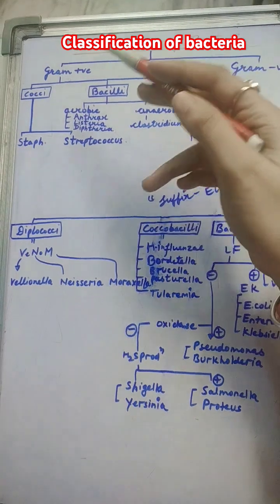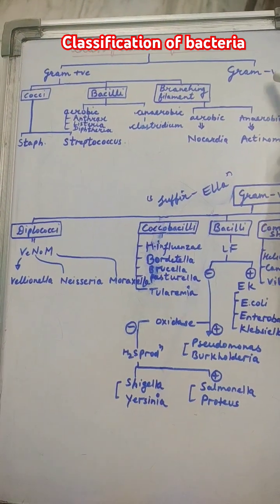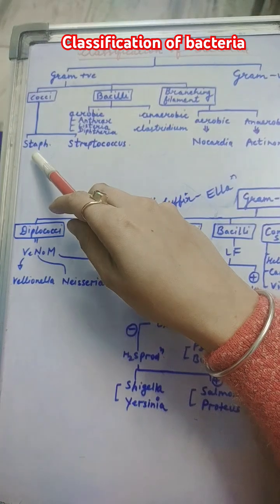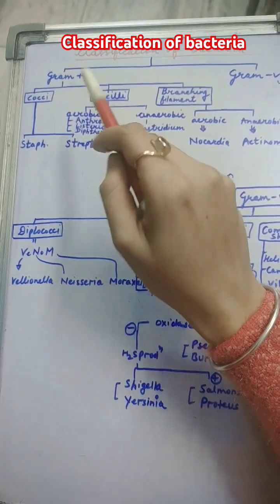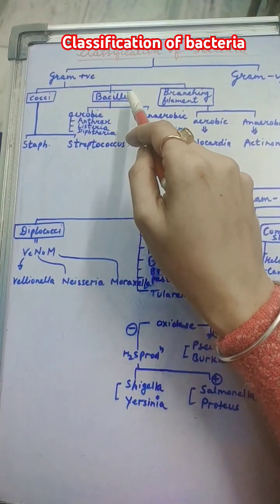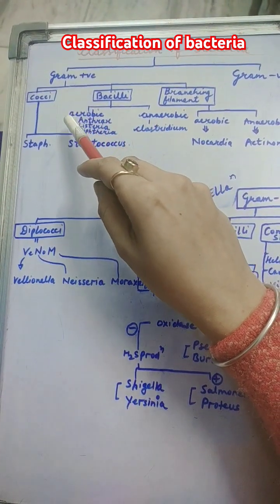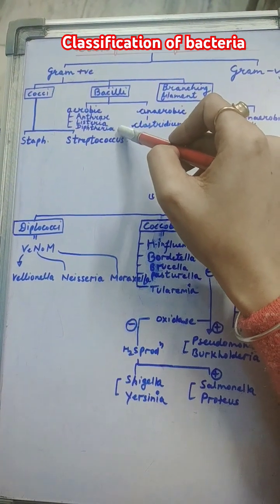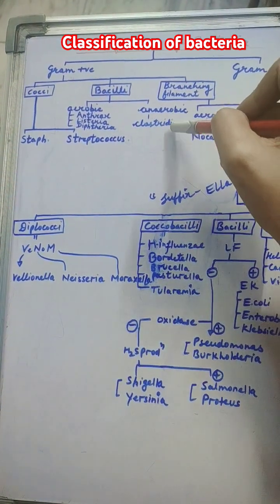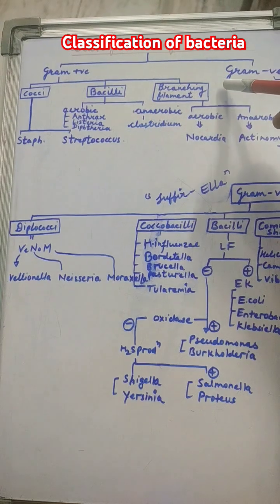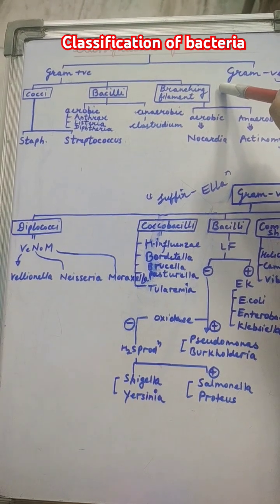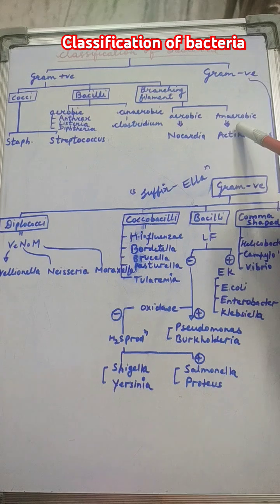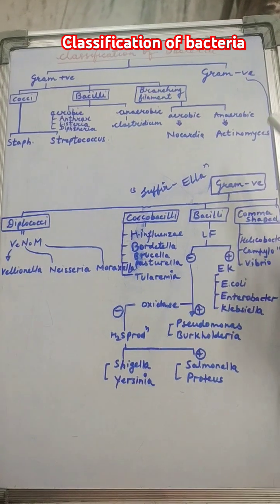Bacteria are divided into gram positive and gram negative. In gram positive cocci, there are Staph and Streptococcus. In gram positive bacilli, the aerobic section includes Anthrax, Listeria, and Diphtheria, while the anaerobic section includes Clostridium. For gram positive branching filaments, aerobic is Nocardia and anaerobic is Actinomyces.